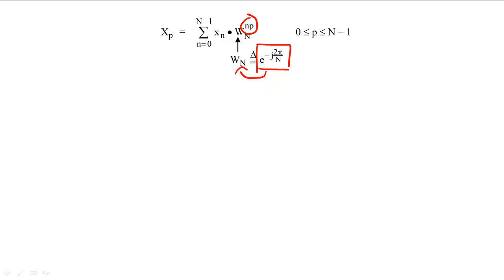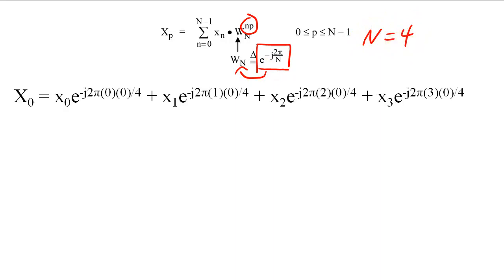To figure out how to reduce the computation time of the DFT, let's work through the computation of the DFT for a four-sample signal. The first DFT value is computed by raising every W sub n to the power indicated by the time index, and also by raising every W sub n to the power indicated by the DFT sample index.